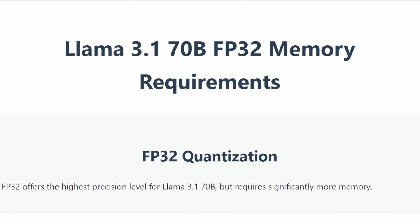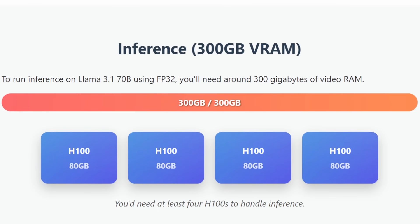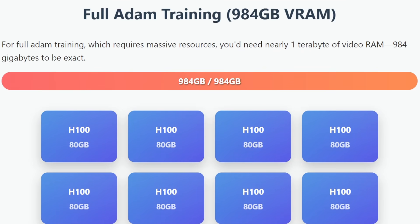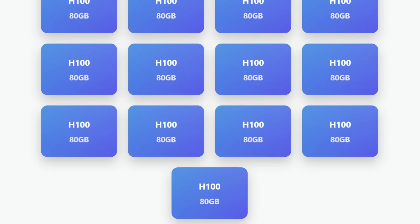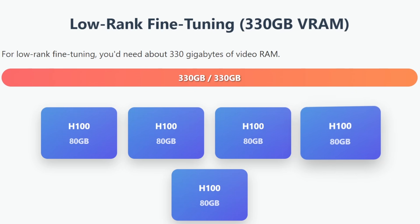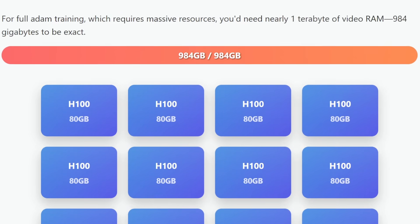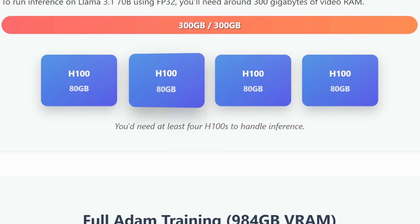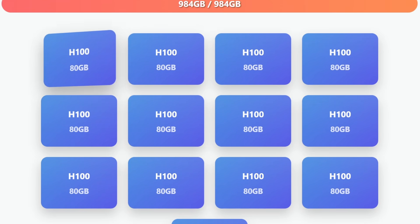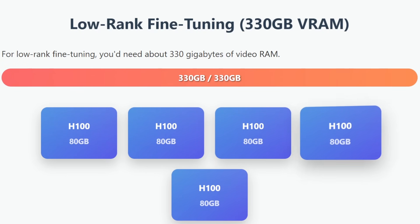Finally, let's talk about FP32, the highest precision level. You would need around 300 gigabytes of VRAM for inference. For full training, you'll need nearly 1 terabyte — 984 gigabytes to be exact. For low-rank fine-tuning, you'd need about 330 gigabytes. For example, you'd need at least 4 H100s for inference, 13 for full training, and 5 for low-rank fine-tuning with 2% trainable parameters.